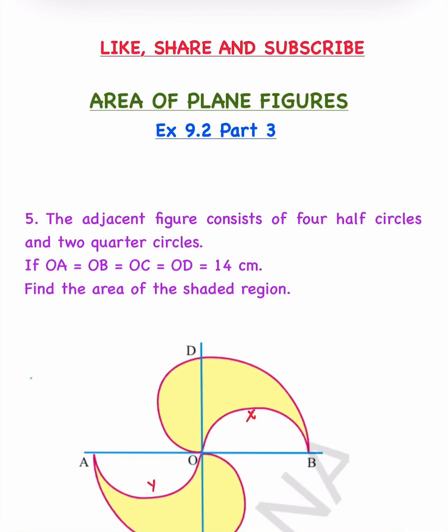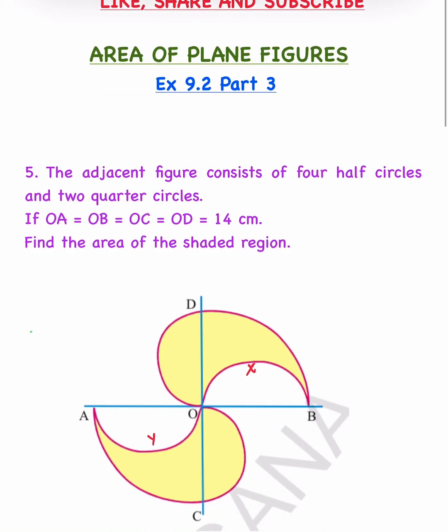Area of plane figures, exercise 9.2, part 3, fifth problem. The adjacent figure consists of 4 half circles and 2 quarter circles. If OA equal to OB equal to OC equal to OD equal to 14 cm, find the area of the shaded region.